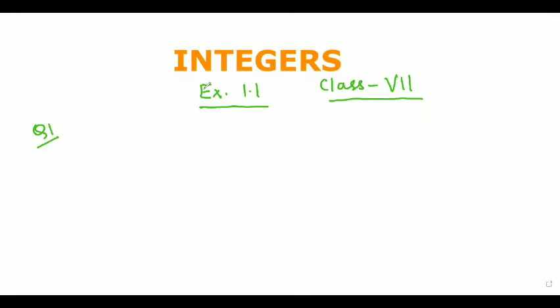So not to waste further time, let's check out how to solve question number 1 to question number 4 of the chapter on integers, exercise 1.1. Question number 1 says: find the absolute value of 17 minus 25.